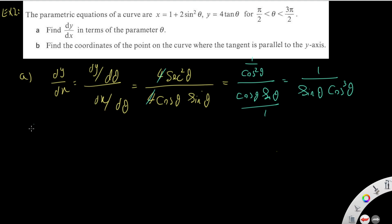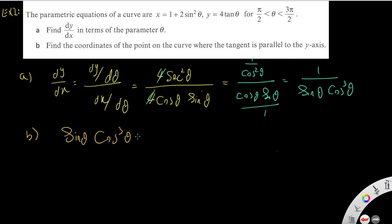That is dy/dx. Part b — find the coordinates of the point on the curve where the tangent is parallel to the y-axis. A vertical tangent means the gradient tends to infinity, so the denominator of dy/dx must equal zero: sinθ cos³θ equals zero.